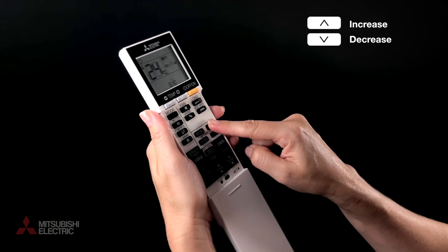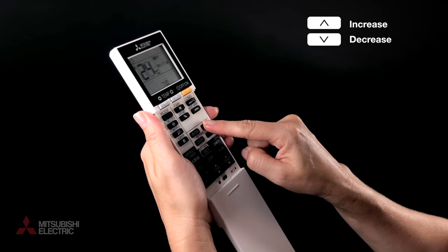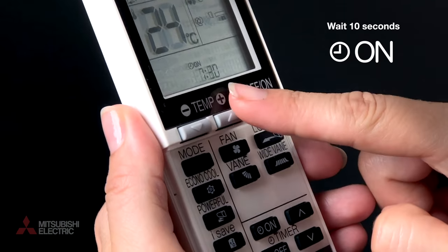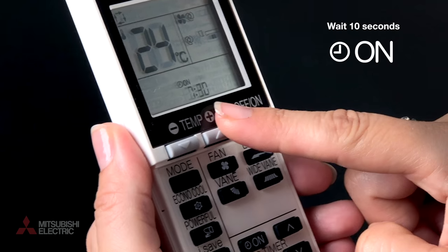Press the increase or decrease buttons to select a time. Note that the clock uses a 24-hour display. As an example, we're setting this to come on at 7:30 a.m.